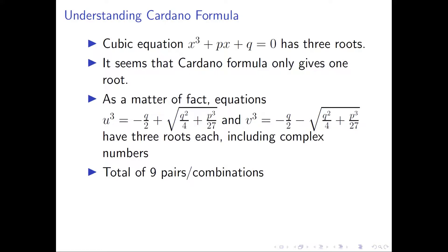So we have a total of nine combinations for different u's and different v's. And then we can test 3uv plus p equals zero. We will see only three pairs satisfy the equality. Those are the roots of the cubic equation.